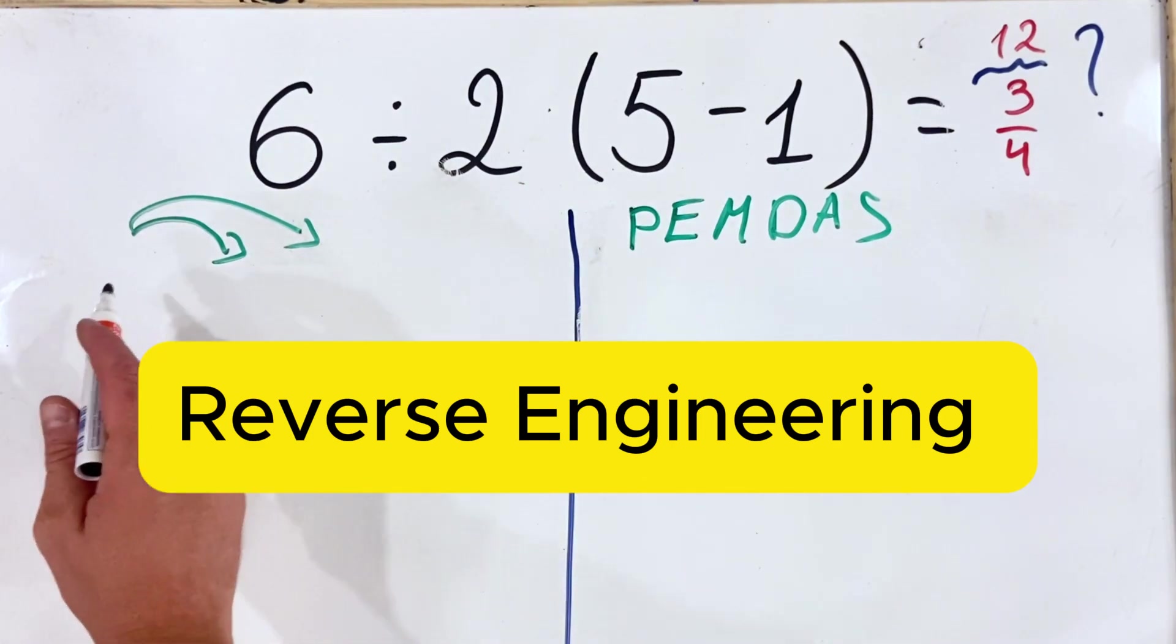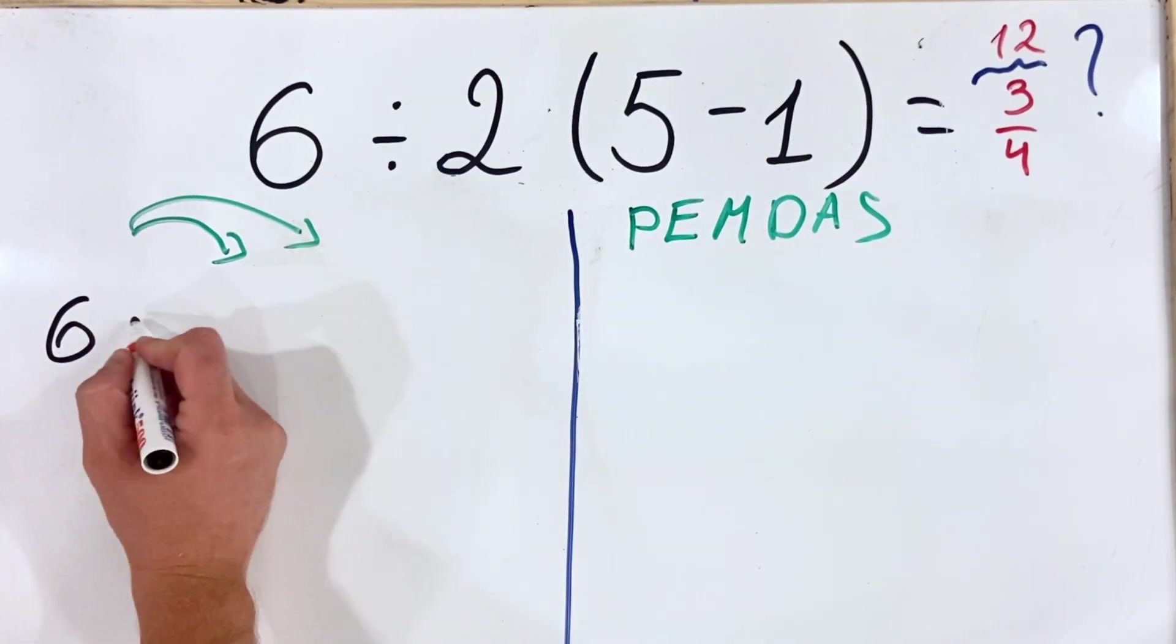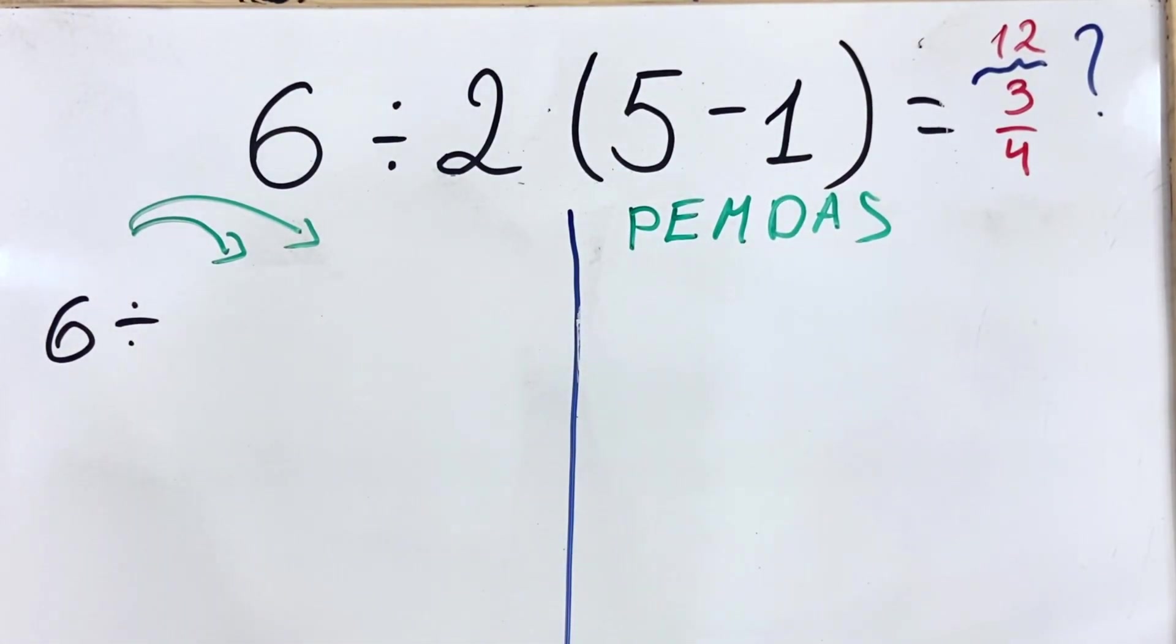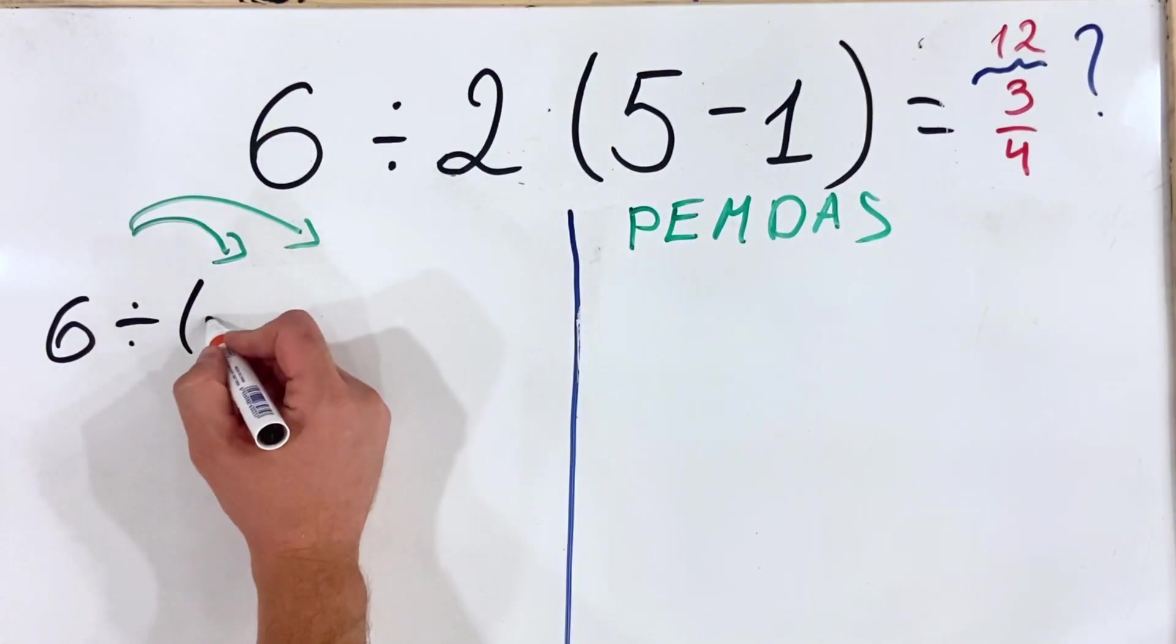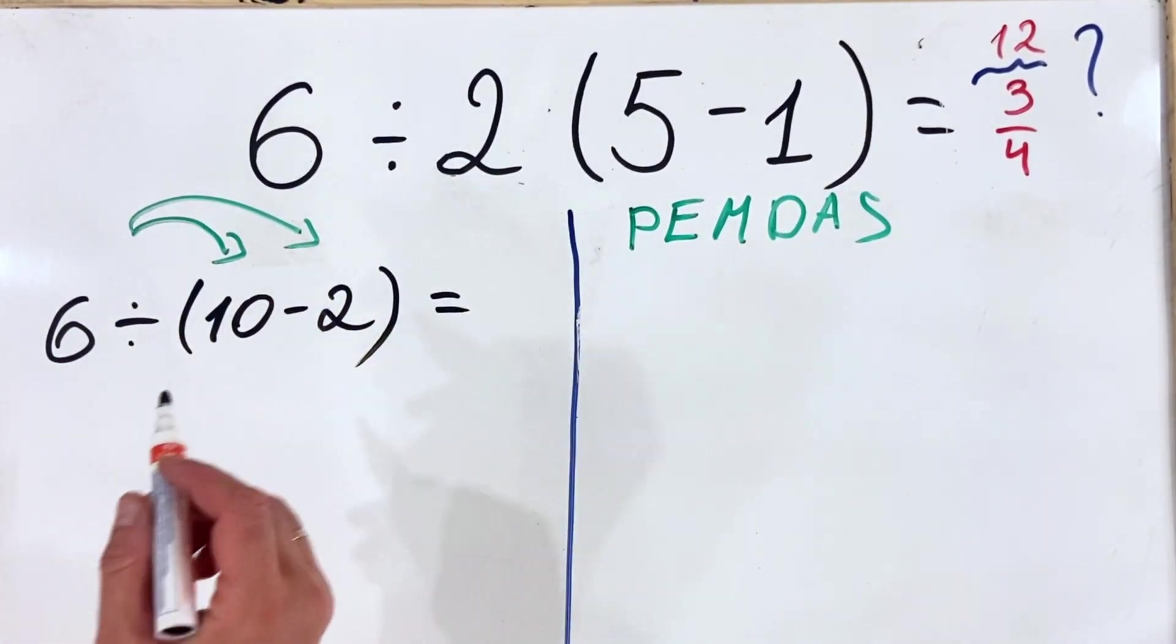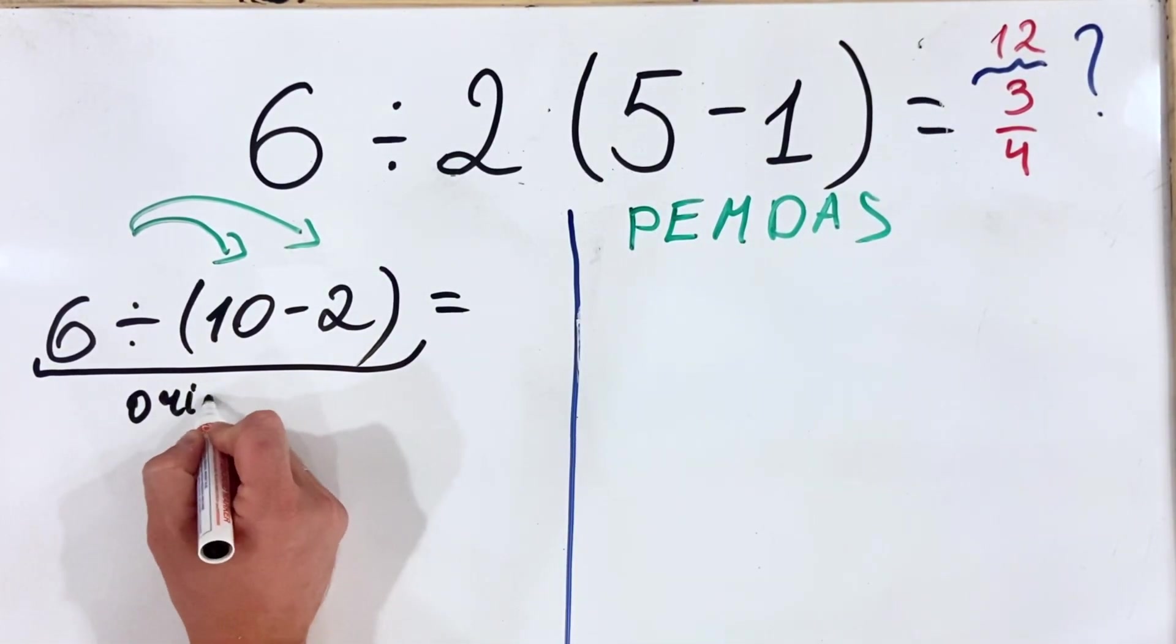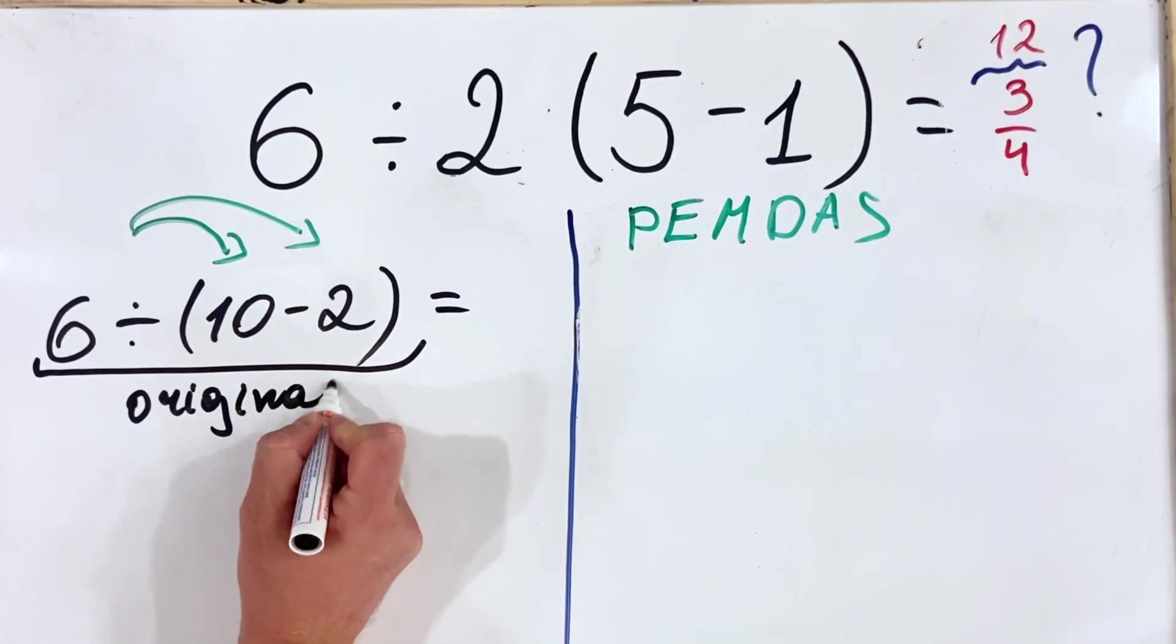So let's first do the reverse engineering for implicit multiplication approach. Let's assume that we have 6 divided by (10 minus 2). So let's assume that this is the original equation.